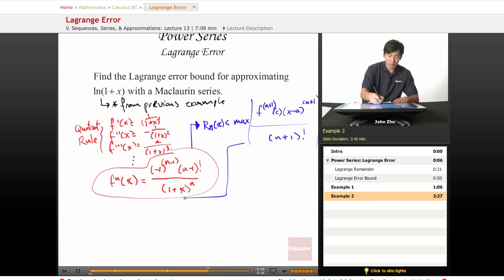Let's go ahead and plug in every component. The error bound here is defined by the max value of the absolute value of (-1)^(n+1) times n! over (1+c)^(n+1) times x^(n+1) over (n+1)!.